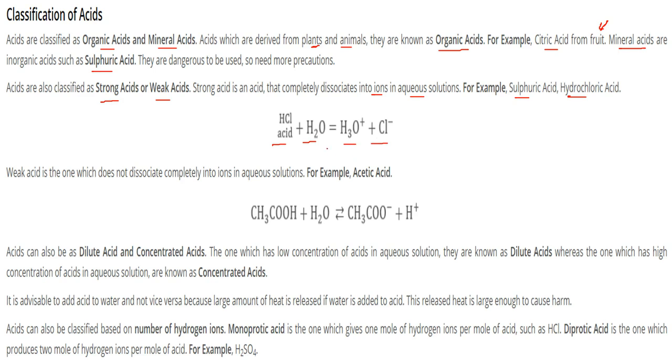While weak acids are called weak acids because they do not dissociate or disintegrate completely into ions in aqueous solution. For example, acetic acid does not completely dissociate. Acids can be dilute acids and concentrated acids.